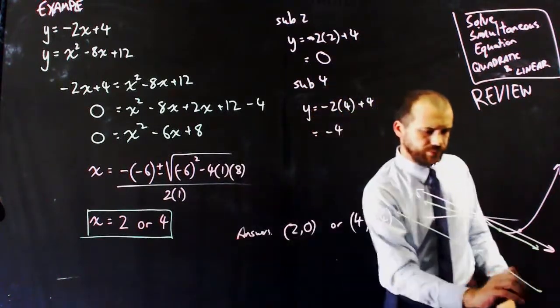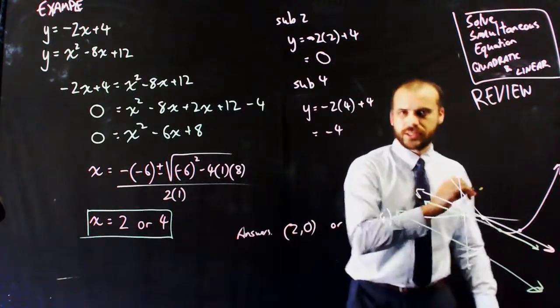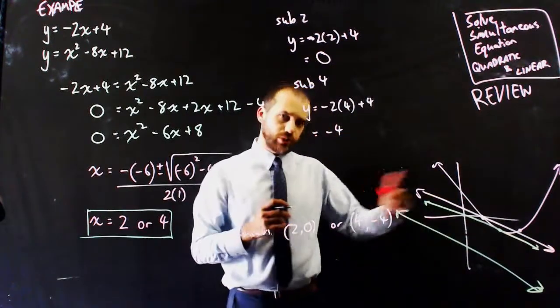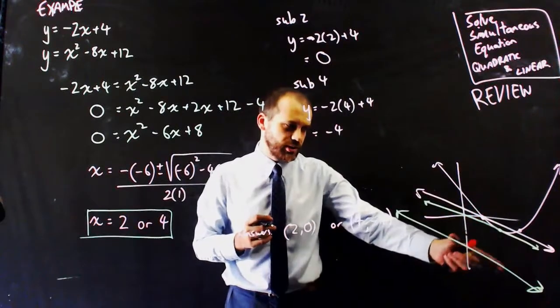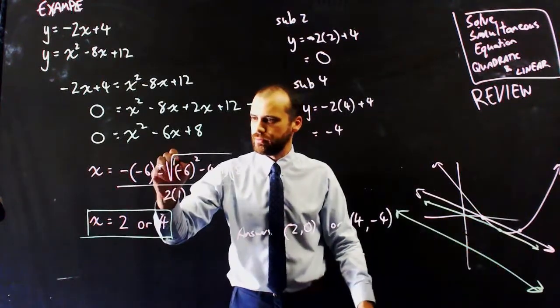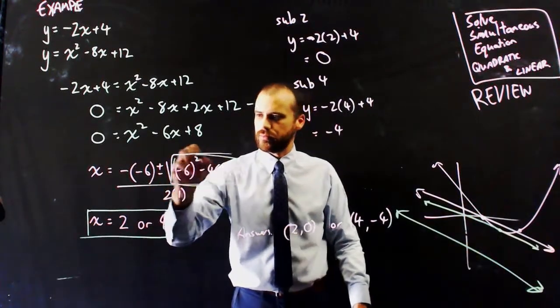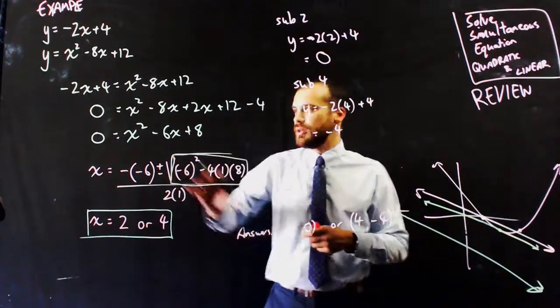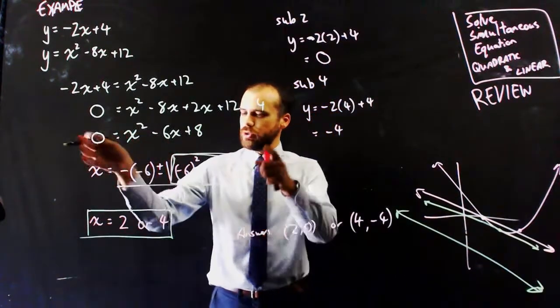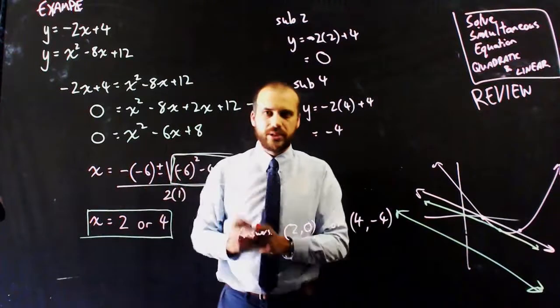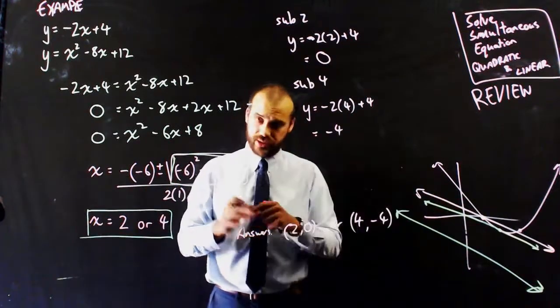But you might also get zero answers. Now, what determines whether you get two answers, one answer, or zero answers? The discriminant. If you get to this stage and you put it into here, and the discriminant is positive, you're going to get two answers. That's what I've got here.